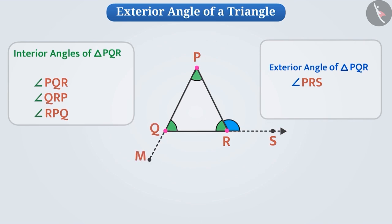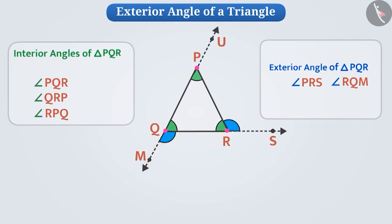If we extend side PQ through M, then the exterior angle formed is angle RQM, which is an exterior angle formed at vertex Q of the triangle. Similarly, if we extend side PQ through U in the upward direction, we will get the exterior angle RPU. Exterior angles can be formed for a triangle in many ways.